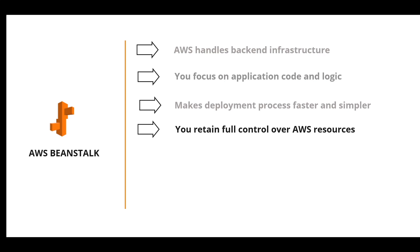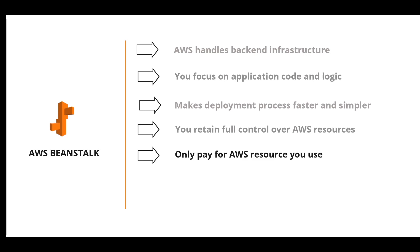You have the freedom to select the AWS resources such as instance type and processor type to run the workload. There is no additional charge for the Elastic Beanstalk service — you only pay for the resources you use to run your application, like storage in Amazon S3. The cost can vary with the number of EC2 instances, the size of the bucket, and the configuration of the backend database instances.